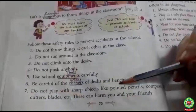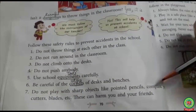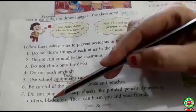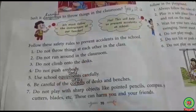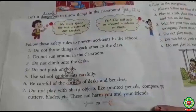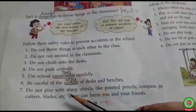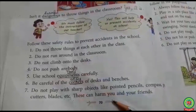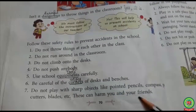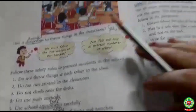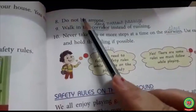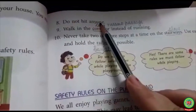Number seven: do not play with sharp objects like pointed pencils, compass, paper cutters, blades, etc., as these objects can harm you and your friends. Number eight: do not hit anyone.